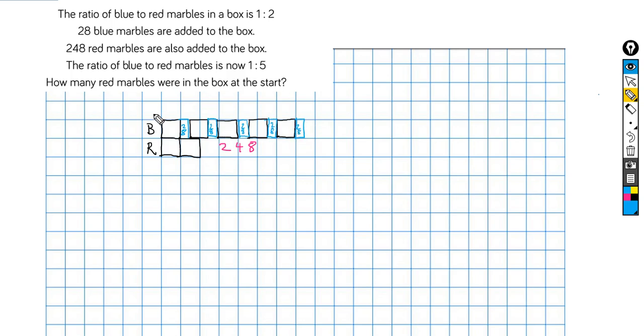So where I've got this one to five, so that's now one portion of blue, two, three, four, five. That, we're told, is the same size as one red.